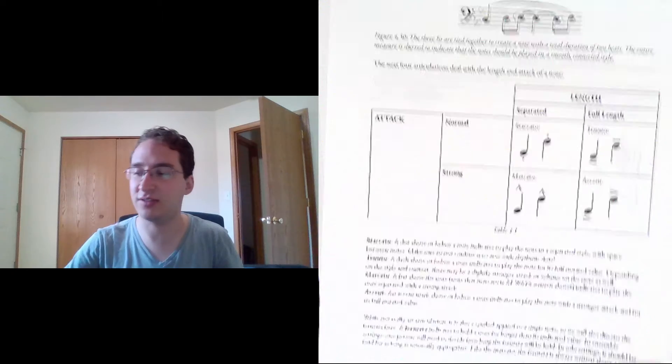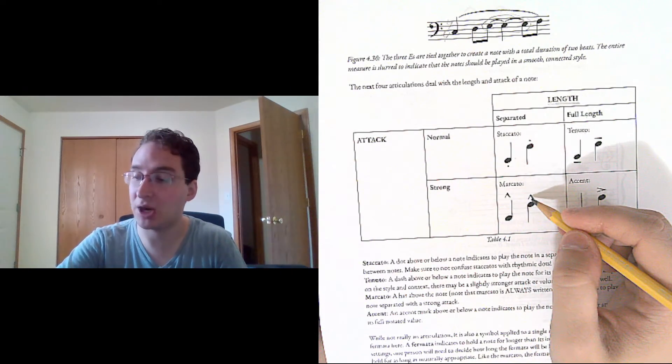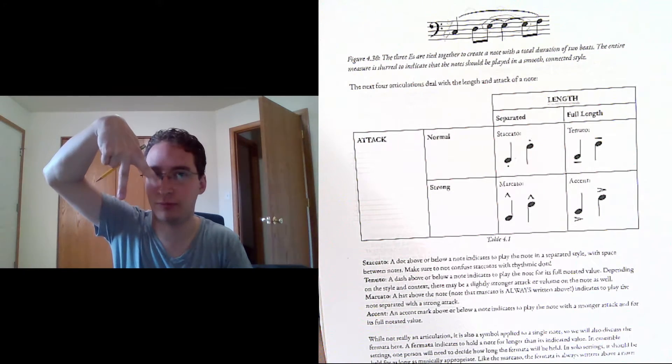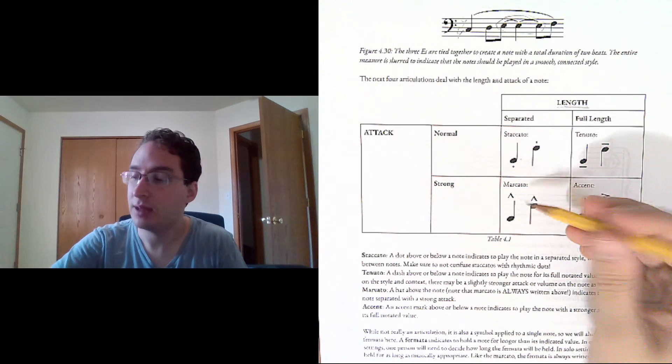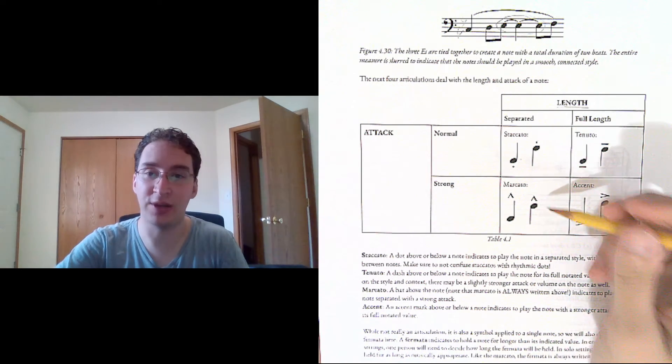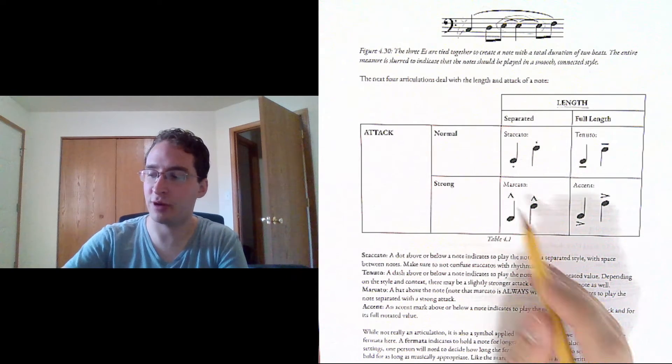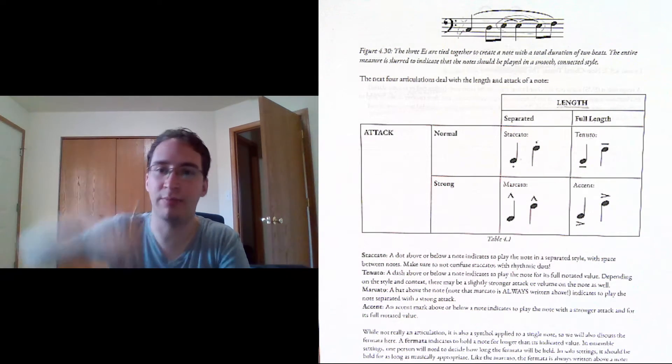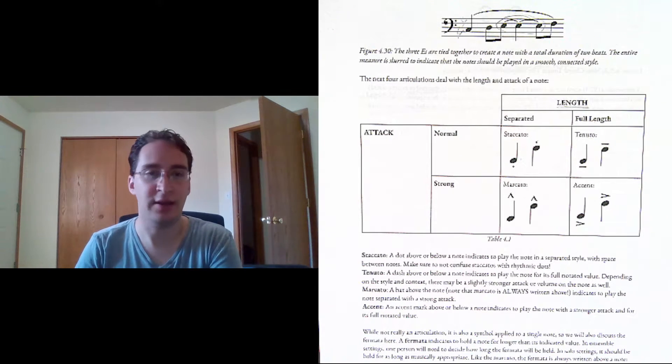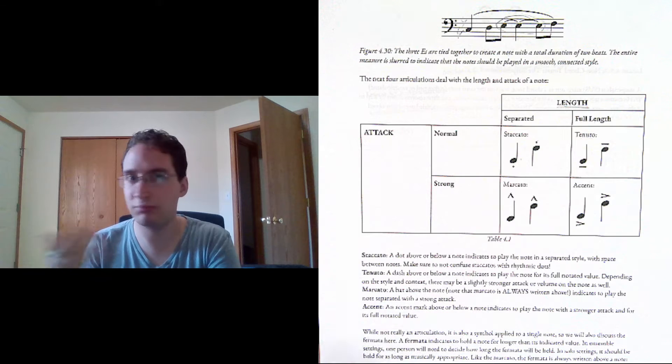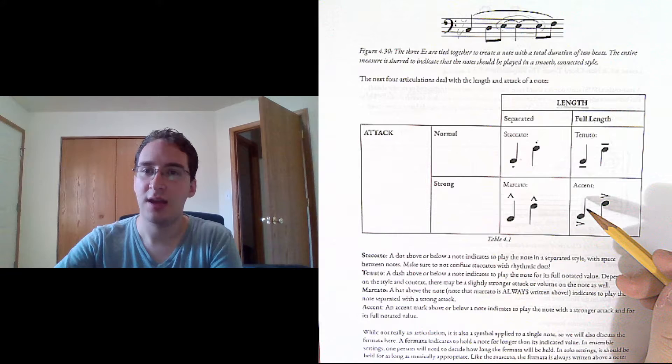Strong attack with separation is called marcato. It has this kind of hat or roof shaped—it has a hat and it's especially a hat because it always goes above the note. That's unique. All the others can go either above or below. Marcato always above.